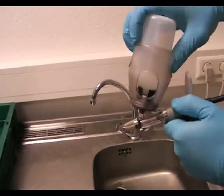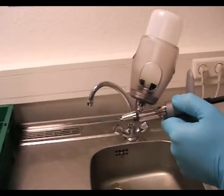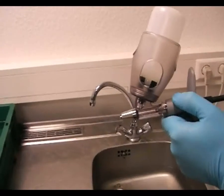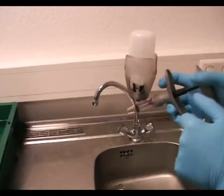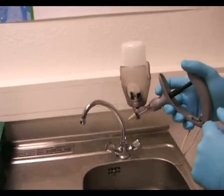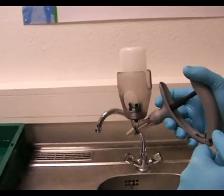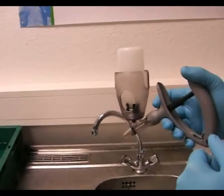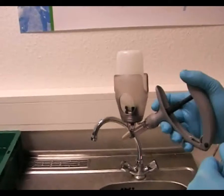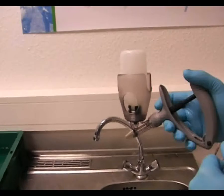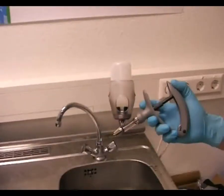Nun wird die Spritze durch ein zweimaliges, schnelles Bewegen des Griffes mit dem Medikament, hier natürlich trocken vorgeführt, aufgezogen. Nach dem zweiten Kolbenhub ist die Spritze aufgezogen, ohne Luft und nach Ansetzen der Kanüle kann die Injektion beginnen.